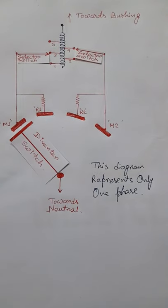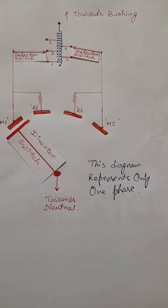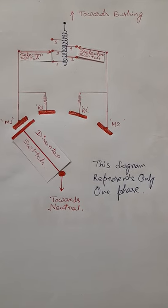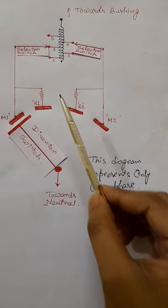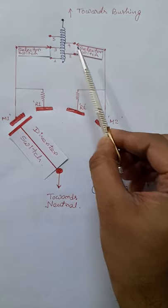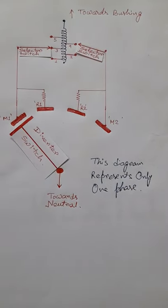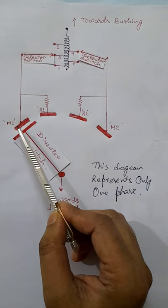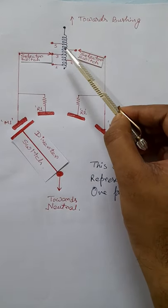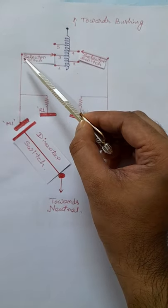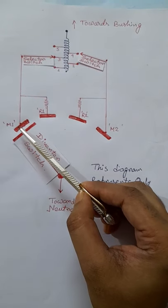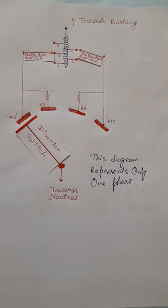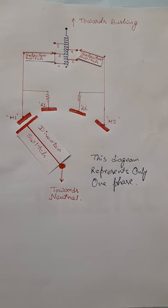In an onload tap changer, two selector switches are used simultaneously for tap changing operation, and this diagram represents only one phase of a three-phase transformer — the other two phases are similar. Notice that one selector switch is connected with tap three and another with tap four. The actual tap position of this transformer is three, because the diverter switch is connected with terminal M1, and the path of load current flows through terminal three, through the selector switch, via M1 and the diverter switch. Though the right-hand side selector switch is connected with tap number four, there is no current flow through it.